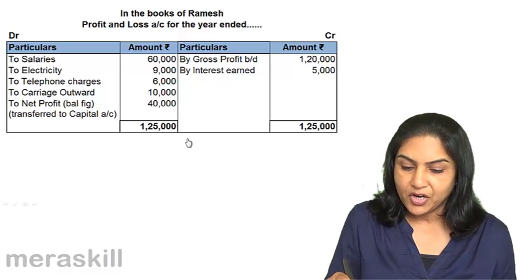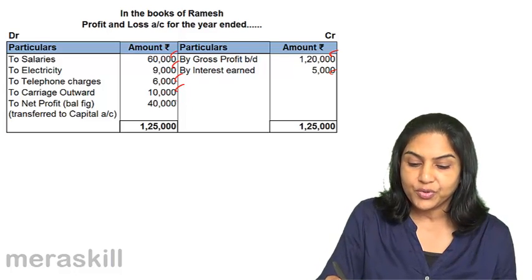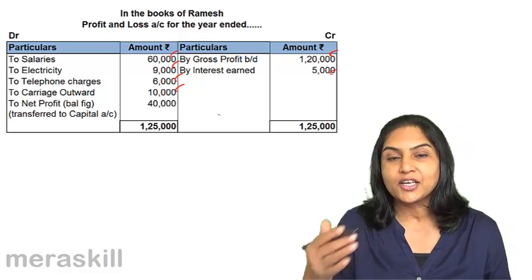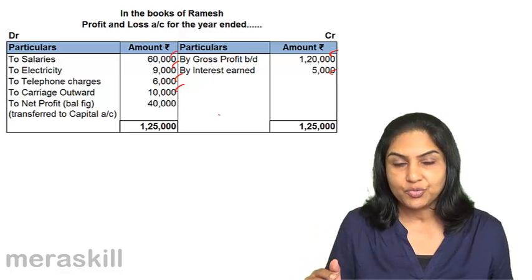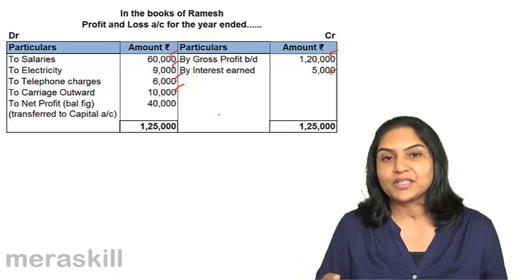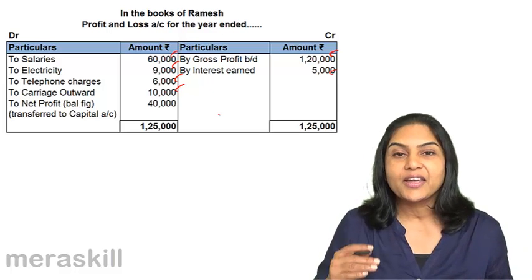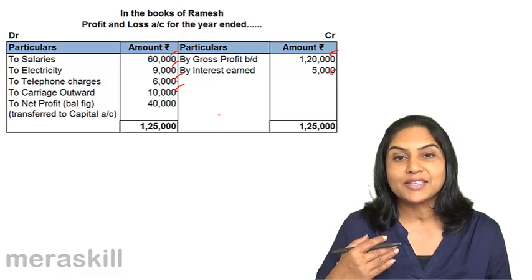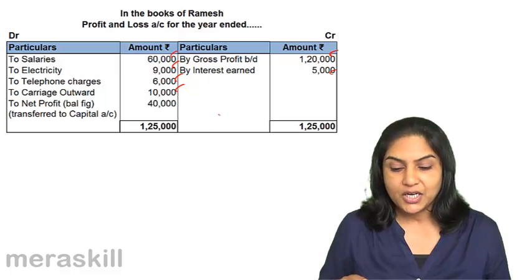In the profit and loss account: by gross profit brought down, we have interest earned. Expenses include salaries, electricity, telephone charges, and carriage outward. Carriage outward is the cost incurred in sending goods out while selling them. Carriage inward and carriage outward are both expenses, but carriage inward relates to purchases and is shown in the trading account, while carriage outward relates to sales and is therefore a profit and loss account item.